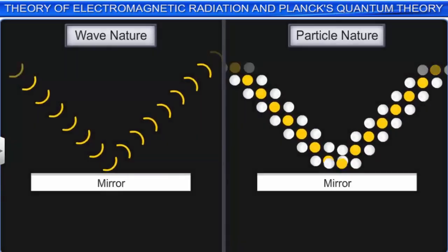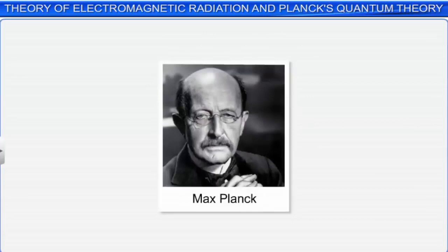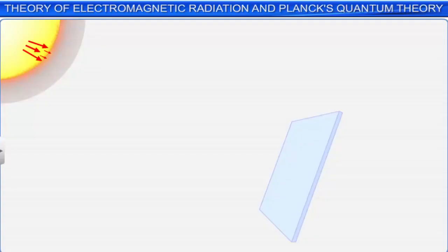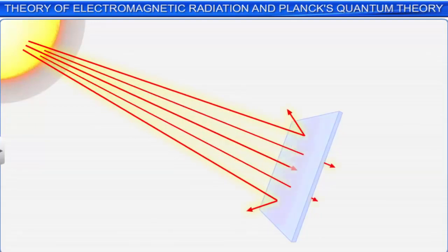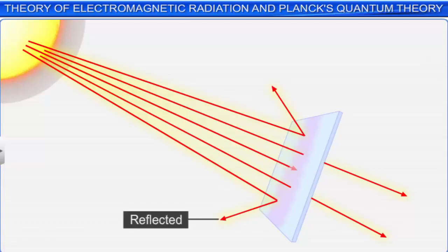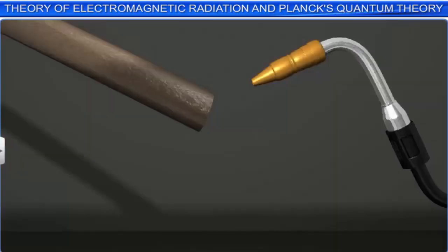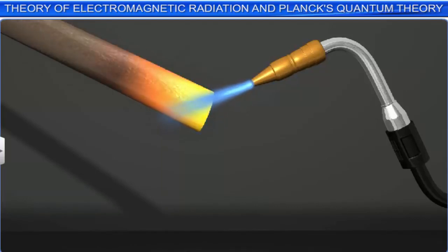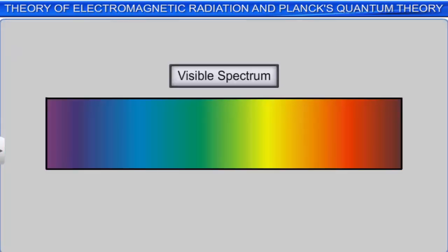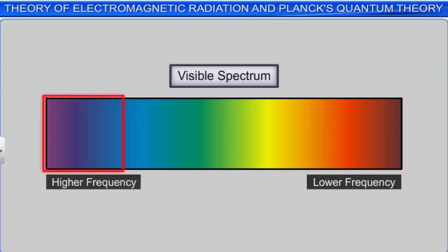First, let us understand the phenomenon of black body radiation, given by Max Planck in 1900. In general, when radiation strikes any surface of a body, part of it is reflected, part is absorbed, and part is transmitted. For example, when an iron rod is heated, at first it turns red; as temperature increases it becomes yellow, then white, and finally blue — showing that radiation is emitted in order of increasing frequency, with red light at lower frequency and blue light at higher frequency of the visible region.